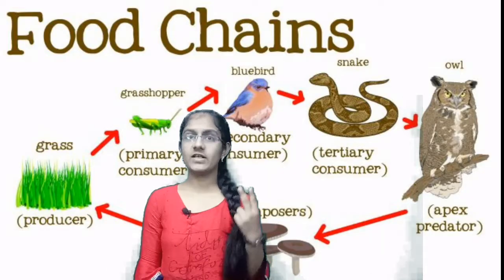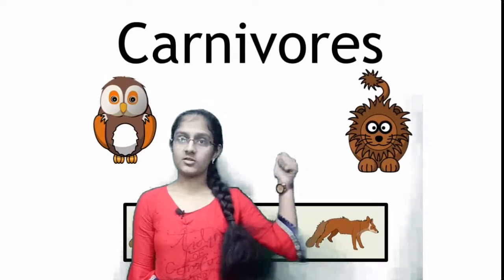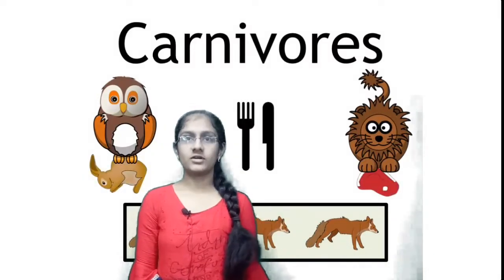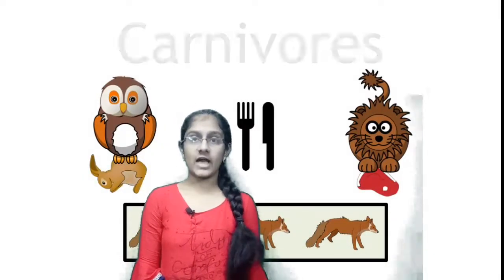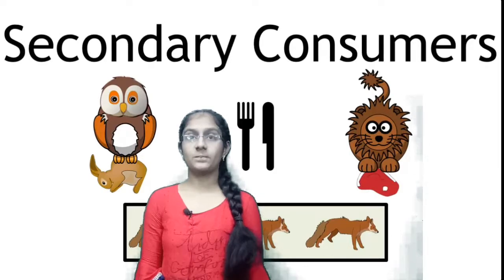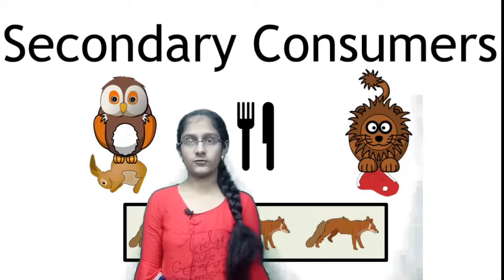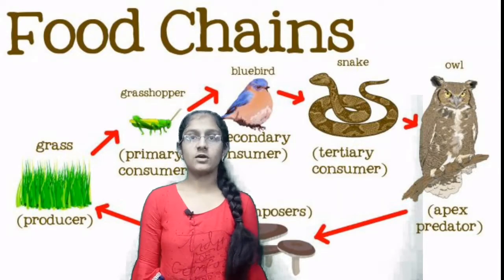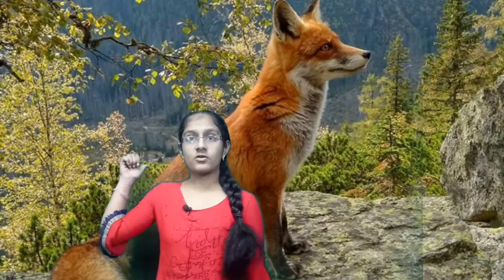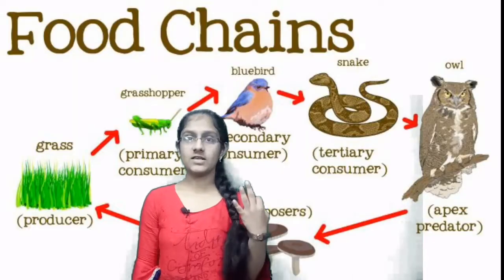Now we learn the second type: the secondary consumer. The type of secondary consumer is the carnivores, which depends upon the herbivores for food. Examples of secondary consumer: fox, frog, etc.